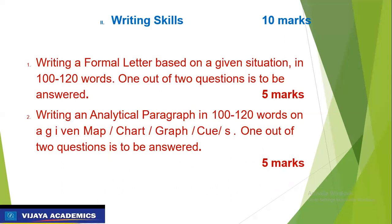The next part of Section B is Writing Skill, which carries 10 marks. Writing a formal letter based on a given situation — you are supposed to write this letter in 100 to 120 words. Stick to the word limit. One out of two questions is to be answered, and it carries five marks.